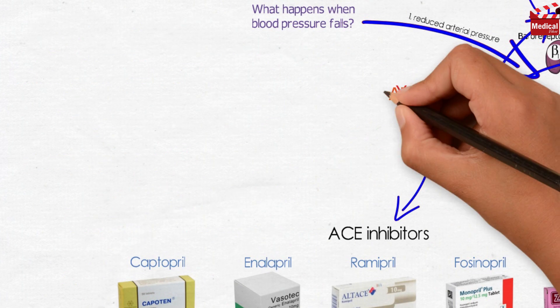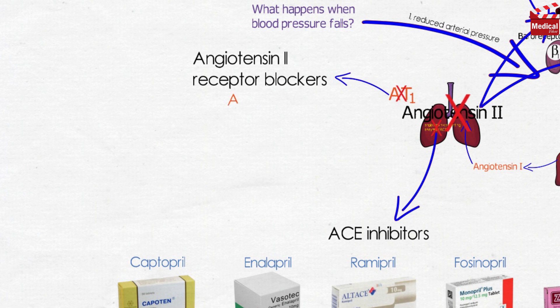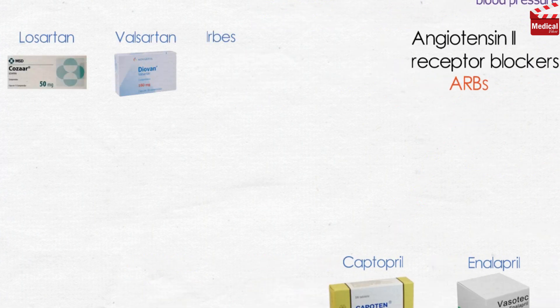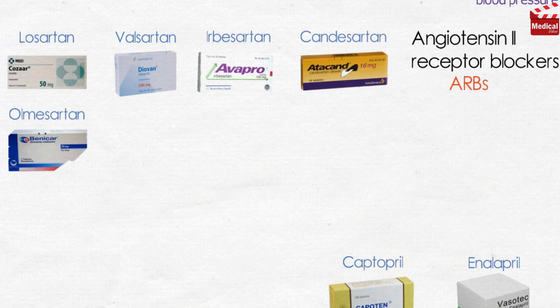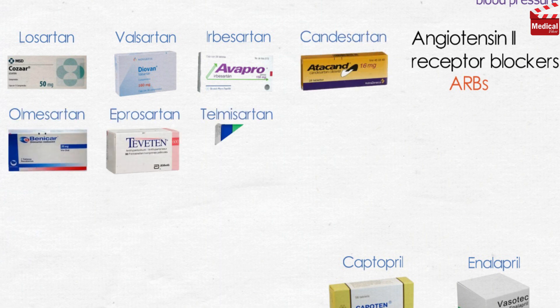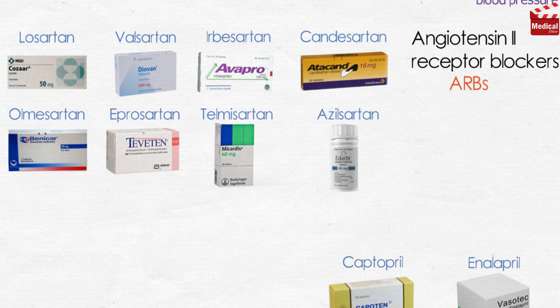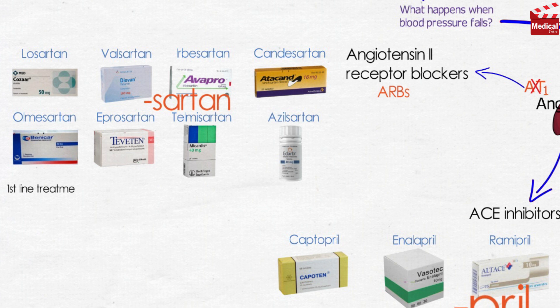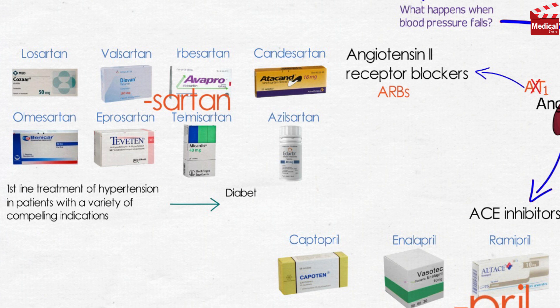The second category is the angiotensin-2 receptor blockers, or ARBs, such as losartan, valsartan, irbesartan, candesartan, olmesartan, eprosartan, telmisartan, and azilsartan — all ending with the suffix '-sartan'. Similar to ACE inhibitors, these agents may be used as first-line agents for hypertension, especially in patients with compelling indications of diabetes, heart failure, or chronic kidney disease. They are considered alternatives to ACE inhibitors.